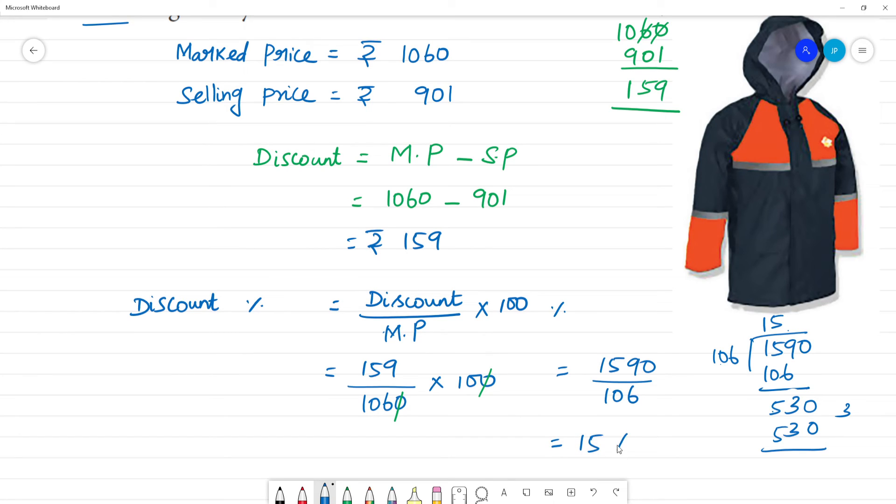What is the discount percentage? Discount percentage is 15 percentage. 5 to 10 cancel, 5 into 3 is 15. So this is the discount percentage, 15 percentage.